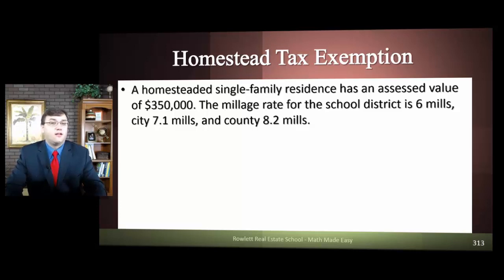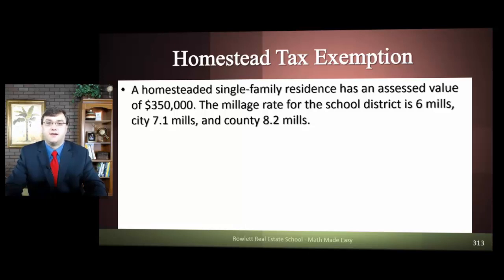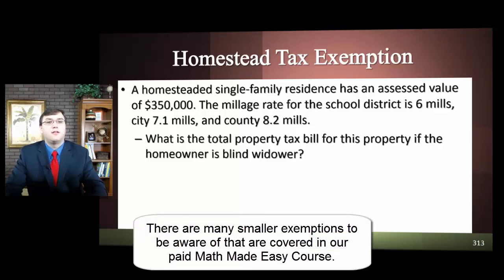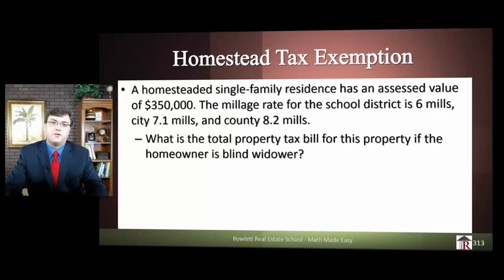That's all the pre-knowledge you need for these problems. Let's see how we actually perform one. A homesteaded single-family residence has an assessed value of $350,000. The millage rate for the school district is six mills, the county is eight point two, and the city is seven point one. What is the total property tax bill for this property if the homeowner is a blind widower? I highly recommend you pause the video and write out the assessed value, then write school, city, and county with your millage rates next to it.